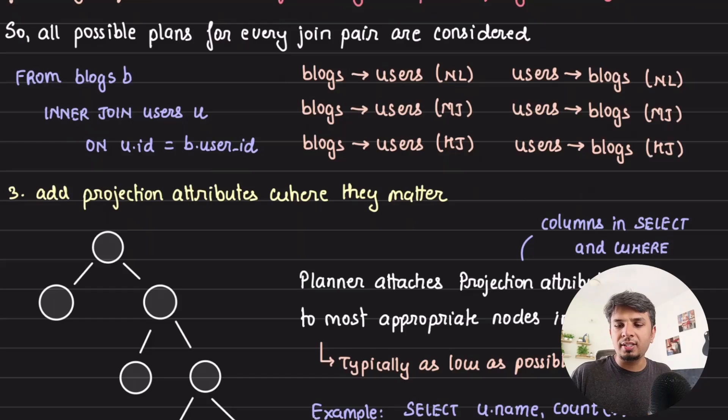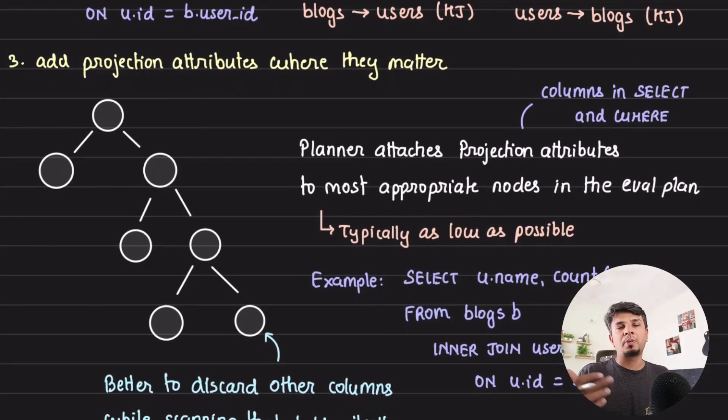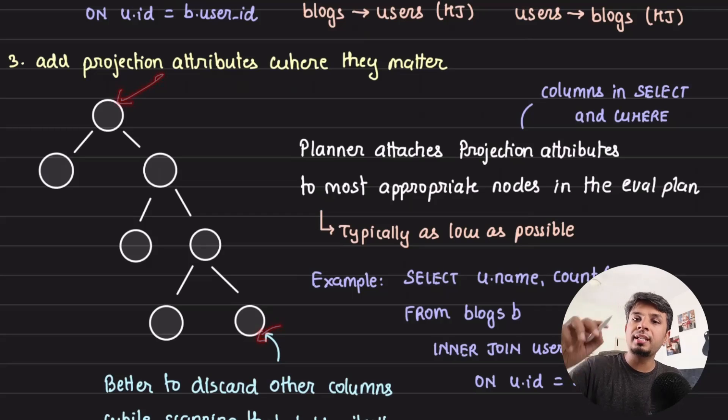The third thing that the planner does in order to generate all possible cases or all possible plans is the projection attributes—the columns that you pass in the select clause, like select user ID, user name, whatnot. That projection attribute, it tries to typically put it as low as possible in the query execution plan it generates. For example, there is no point to filter those things out at the end right before you send, because you are just unnecessarily processing and moving those results from one step to another step.